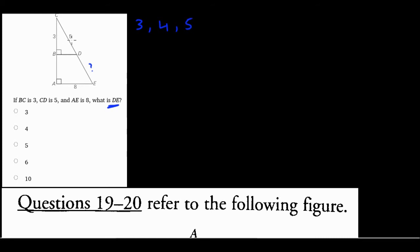Here's the first problem. We have triangles where BC is 3, CD is 5, and AE is 8. We want to find DE. Right off the bat: CBD is a right triangle with sides 3 and 5 — this means the third side has to be 4. It's a 3-4-5 triangle. So BD is 4. You can use the Pythagorean theorem to verify, but just remember it's a 3-4-5 triangle.